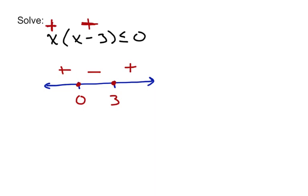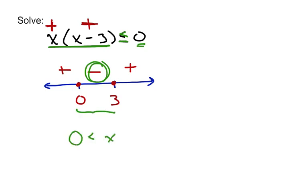We finish this up by looking at our sign chart and solving when this expression is less than or equal to 0. Less than or equal to 0 means the negative region, so this is the interval from 0 to 3. We want x to be between 0 and 3. And since it can equal 0, we include those two endpoints. There's our solution.